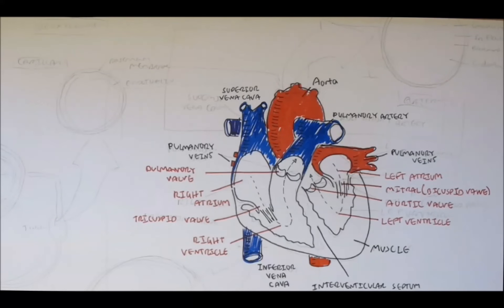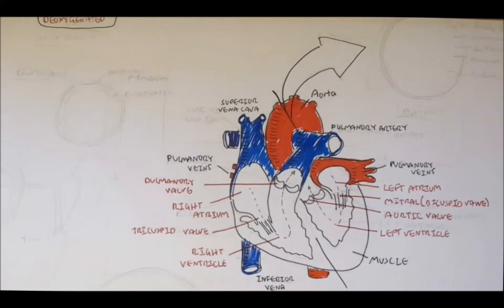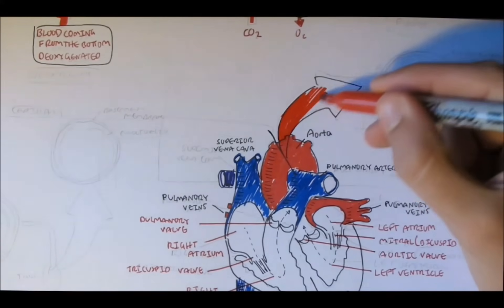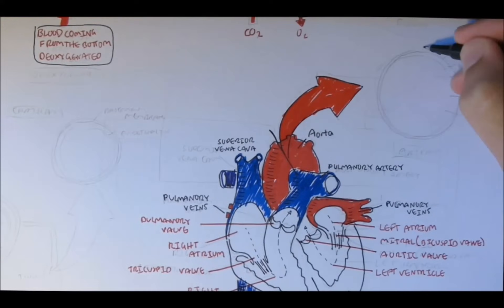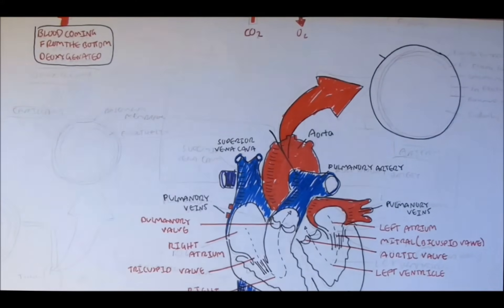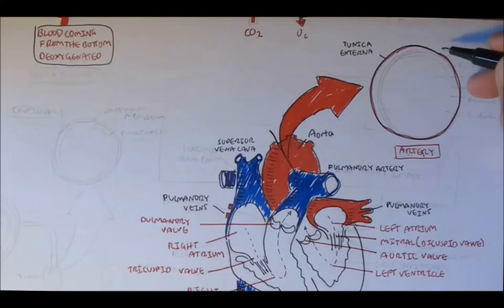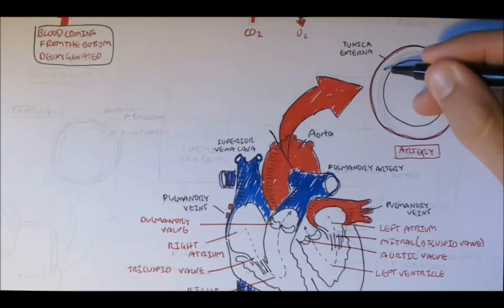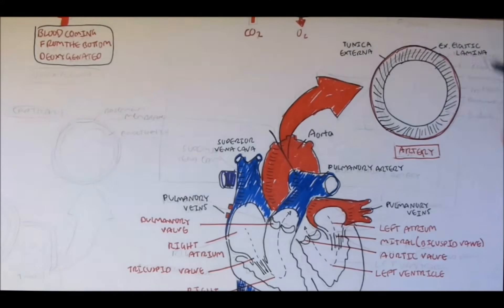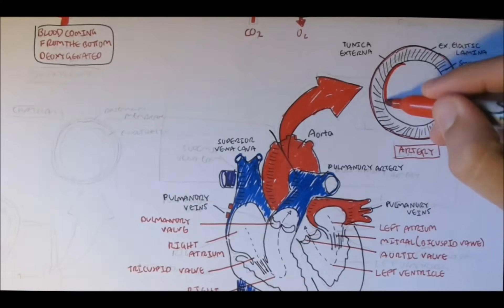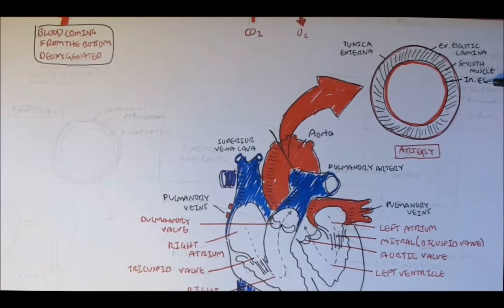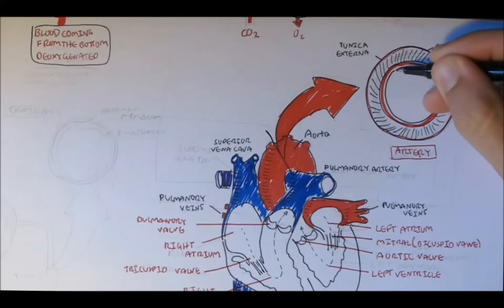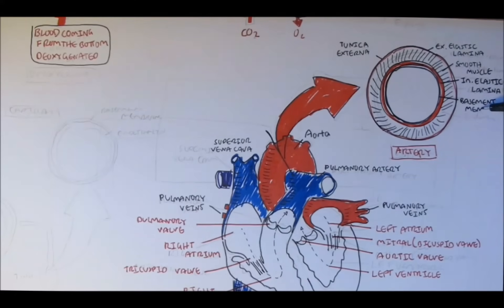Arteries are much stronger and more elastic than veins because they have to push all this blood out of the heart to the whole body. Looking at a cross section of an artery from the outside: there is a tunica externa composed of collagen fibers, then a tunica media composed of an external elastic lamina and very thick smooth muscle, and then a tunica intima composed of an internal elastic lamina, endothelial cells, and a basement membrane for diffusion purposes.